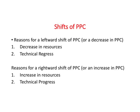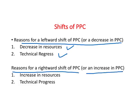The reasons for a leftward shift of PPC are: a decrease in resources and technical regress. Since economics is systematic, exactly the opposite applies for a rightward shift. Reasons for a rightward shift — an increase in PPC — include an increase in resources and technical progress. Technical progress allows you to produce more with the same given resources. This completes our basic discussion of PPC, and we are still working through the fifth assumption needed to understand international trade. Thank you for your time.